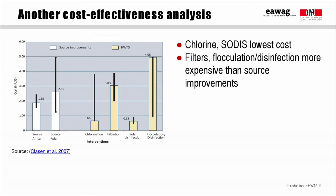Several years later, Tom Clasen at the London School of Hygiene and Tropical Medicine did another cost-effectiveness analysis, this time looking at differences between different HWTS options. He used information from various program implementers to calculate the annual cost of different HWTS options per person served, and compared this against the cost of conventional water interventions — in this case, installing and maintaining wells, boreholes, and communal tap stands in Asia.